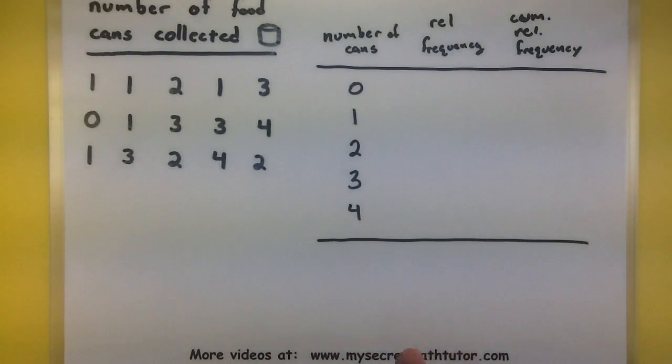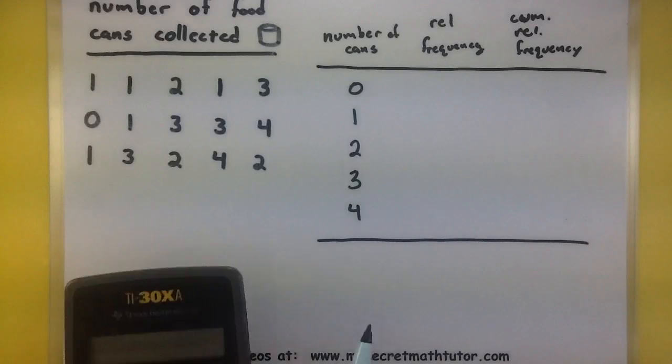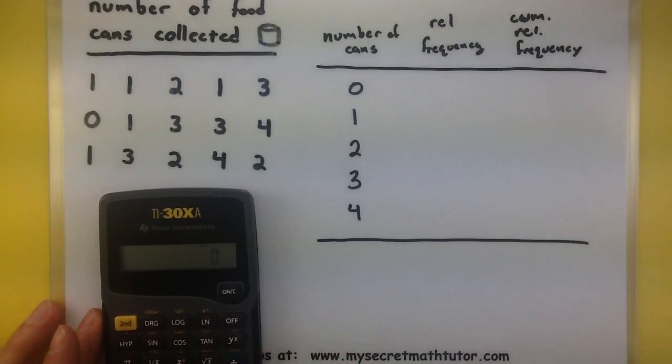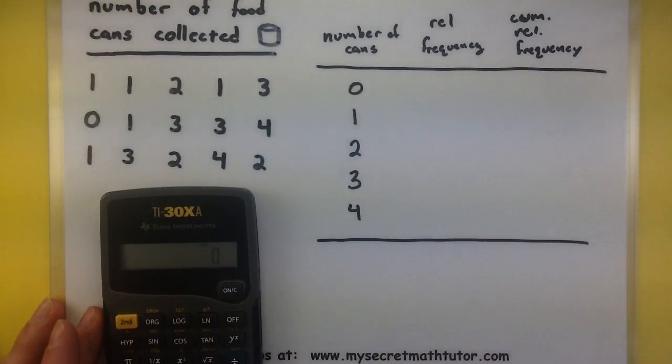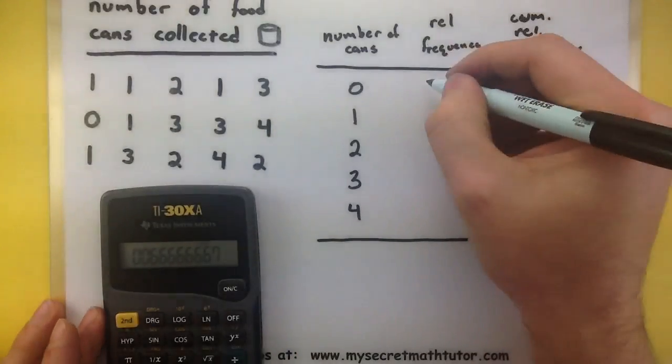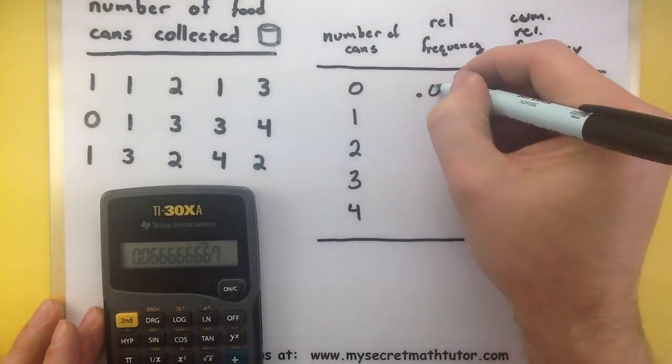For the relative frequency, we want to see how often these appear divided by the total number of data points, which is 15. Starting off with zero, I see it appears on my list once, divide that by 15, a relative frequency of .07.